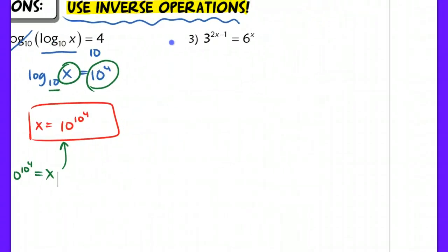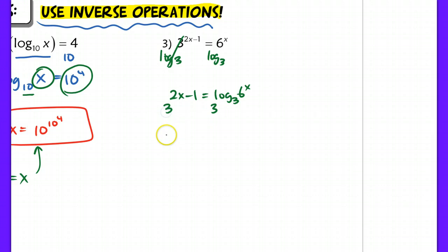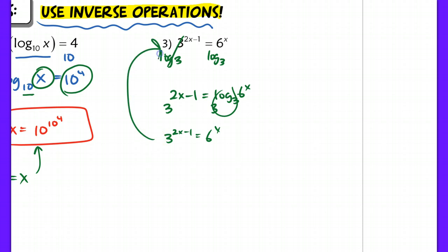Now in this problem we have an exponential equation on both sides. If I try to take log base 3 on both sides, one side cancels but the other gives log base 3 of 6 to the x power, and I end up going in a loop back to the original problem. So when I see an exponential equation that I cannot rewrite with the same base, and I see variables in both exponents, I have to use a different method.